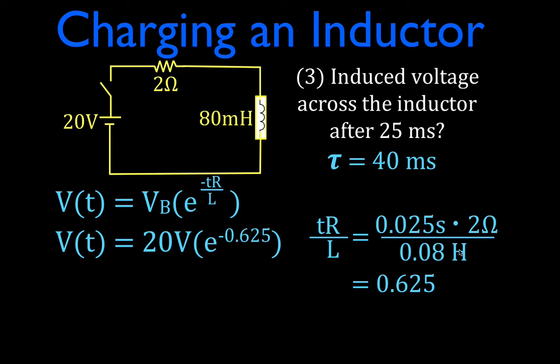That means the voltage with respect to time is 20 volts, because that's the voltage of the source, times E raised to the power of minus, don't forget your minus sign, 0.625. And that gives us E raised to this power is 0.535. That means it'll be 53 percent of the initial maximum voltage.